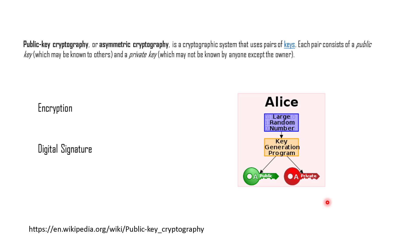The main gist of asymmetric cryptography is that two keys get generated for you — the private key and the public key. The public key can be handed out to anybody, whereas the private key is kept separately in a protected location.